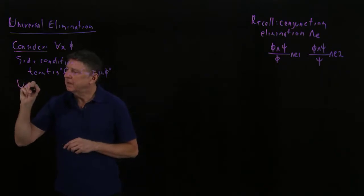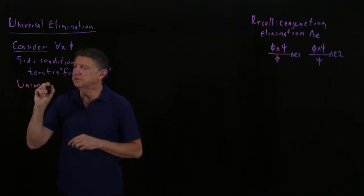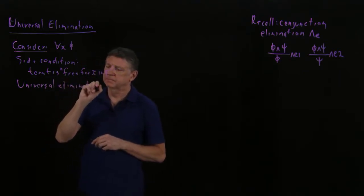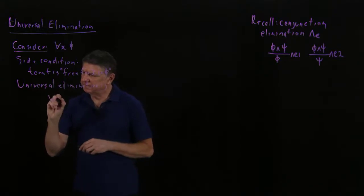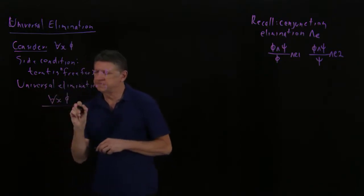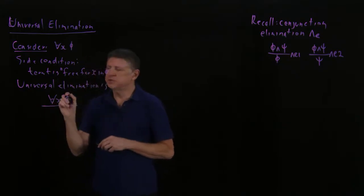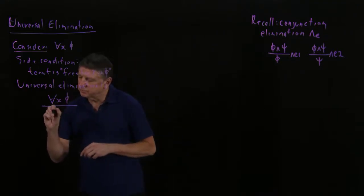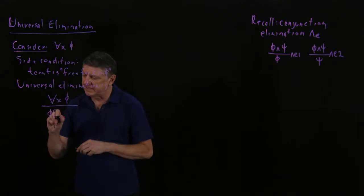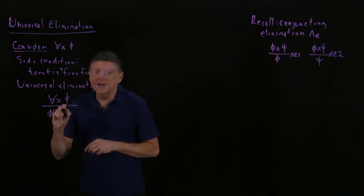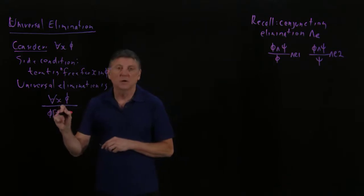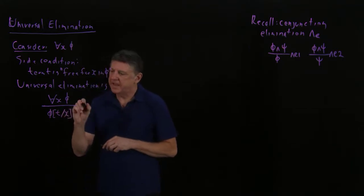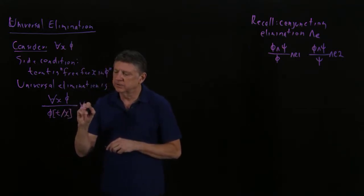So our rule of universal elimination is, if we have a universally quantified formula phi, we can substitute a term t for every occurrence of x in that formula. And the way this is written is, we'll take that term phi, and then in our form of natural deduction, we use a square bracket, and we see t substitute in for x. And we'll call that the rule of universal elimination.